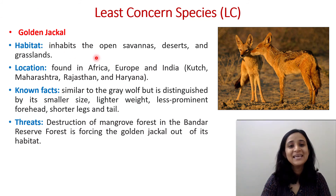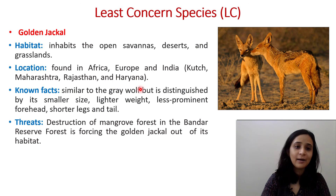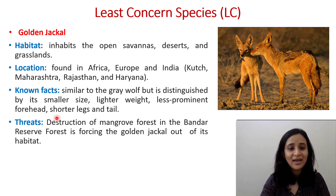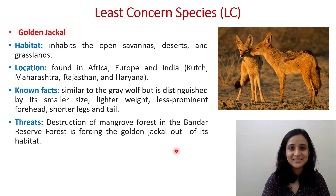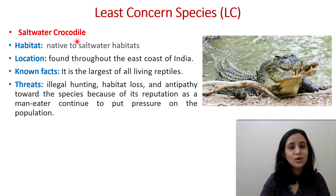Now for Least Concern species — these species are safe. The first is the Golden Jackal, which inhabits open savannas, deserts, and grasslands, found in Africa, Europe, and India — especially in Kutch, Maharashtra, Rajasthan, and Haryana. It is similar to the gray wolf but distinguished by its smaller size, lighter weight, less prominent forehead, and shorter legs and tail. Threats include destruction of mangrove forest in the Bandar Reserve Forest, which is forcing the golden jackal out of its habitat.